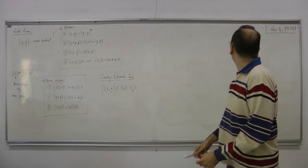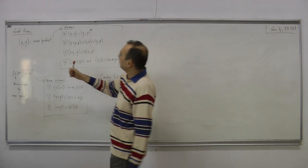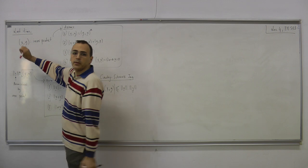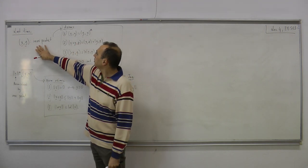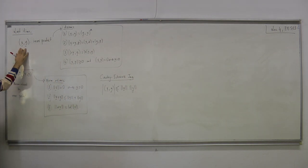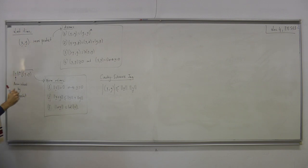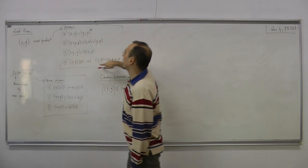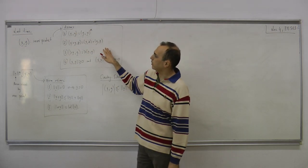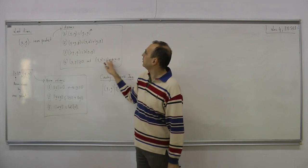Welcome to the fourth lecture of EE503. Last time we defined the inner product. The inner product maps two vectors x and y to a real number, satisfying certain axioms. Assuming a valid inner product satisfying these axioms, we define a norm induced by the inner product.